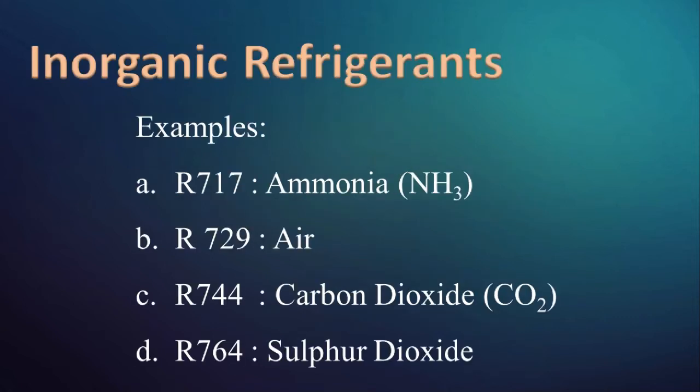Inorganic refrigerants are conventional refrigerants like ammonia, air, carbon dioxide, and sulfur dioxide. These refrigerants are designated by the R7 series. For example, R717 is ammonia. Here R7 is followed by the molecular mass of the refrigerant. For ammonia, molecular mass is 17.